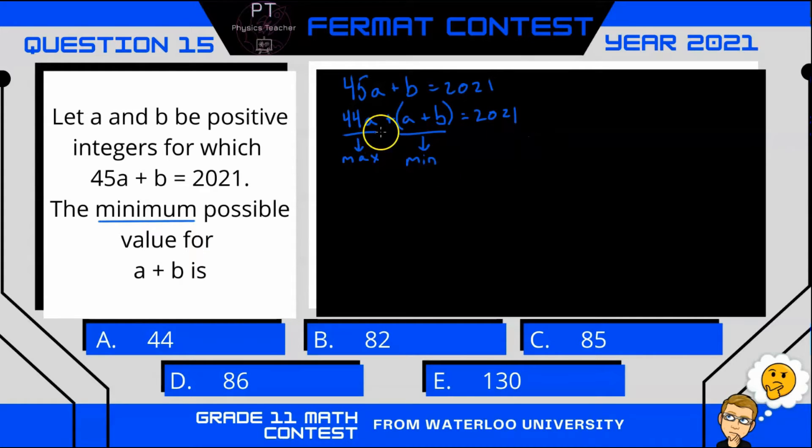Alright, well what if a is 46? If a is 46, then 44a would be 44 × 46, which equals 2024. 2024 is greater than 2021, so this is not possible—that's too big.